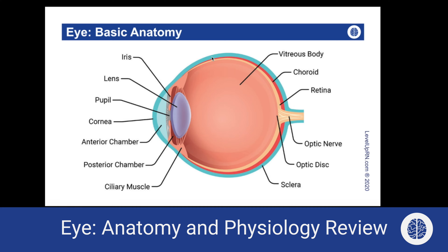The eye is made up of three layers. The outer layer includes the sclera, which is white fibrinous tissue. At the front of the eye, we have the cornea, which is made of transparent tissue, which allows light to enter the eye. The middle layer includes the iris, which is the colored portion of the eye and controls pupil size. The middle layer also includes the ciliary body, which produces aqueous humor. And then we have the choroid, which is the main source of blood supply to the retina. The inner layer includes the retina, which lines the back of the eye, contains the rods and cones, and transmits impulses to the optic nerve.